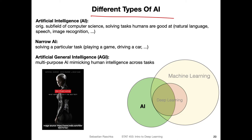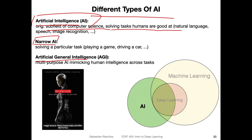There are different types of AI. Generally, AI — artificial intelligence — is a subfield of computer science that solves tasks humans are good at, for example natural language, speech recognition, and image recognition. We can sub-categorize AI into two smaller categories: narrow AI and artificial general intelligence. Narrow AI is a form of AI focused on solving one particular task at a time — for example, image classification, playing a game, driving a car, or an algorithm for unlocking your phone.